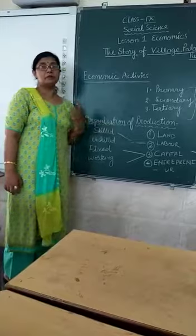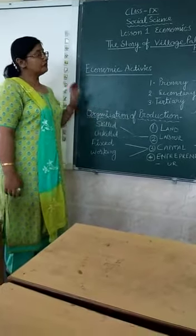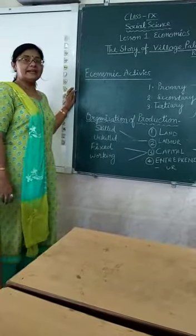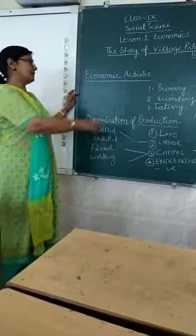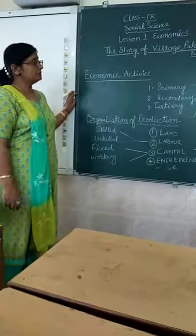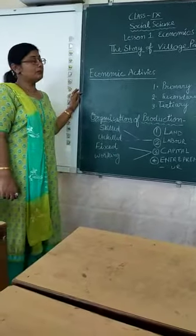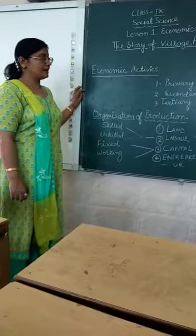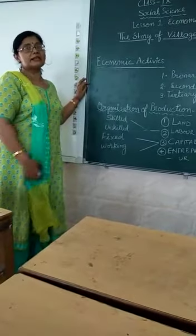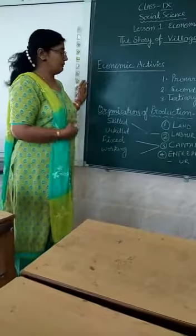When we take primary goods and convert them into valuable goods by using technique and skill, that is designed as secondary activities. For example, making furniture from wood — when someone makes furniture from wood, they use technique and skill, technique in the form of equipment.